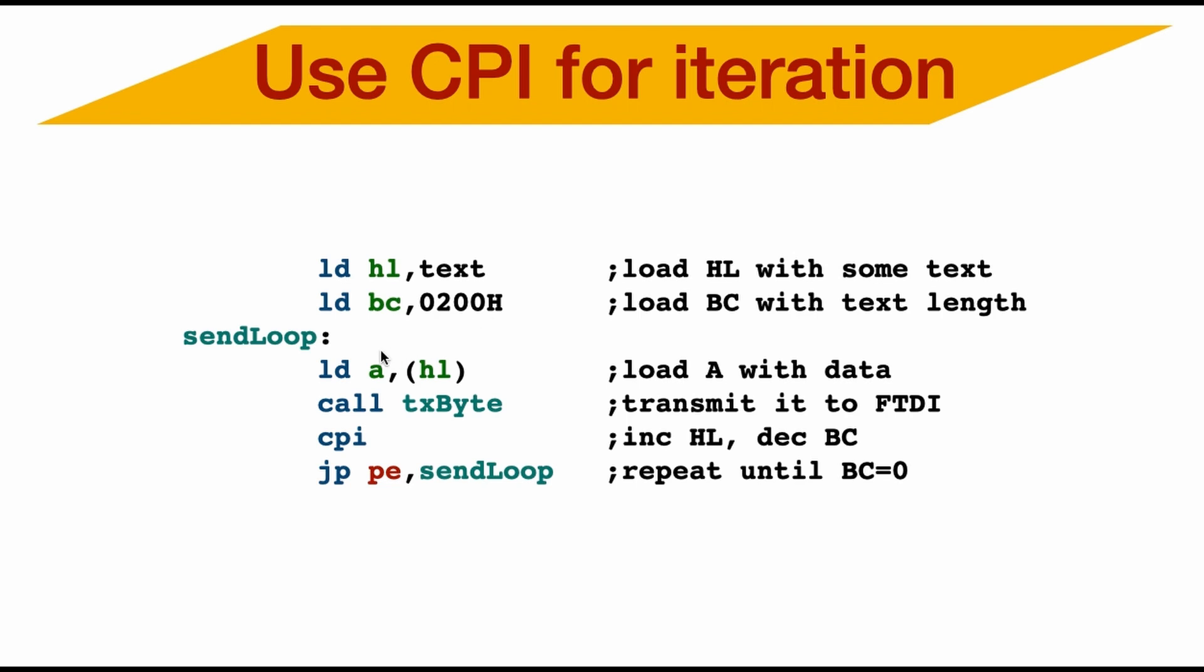So let's say I've got some text pointing to HL and I need to print out 200 hex bytes of length. I use this simple routine. Load A with the value pointing to HL. Call a routine to do something with it. This one here, transmit it by FTDI. Then I do CPI, which will increase HL and decrease BC. But how do I know BC is zero? I just check the parity overflow flag. And there you have it, my current top five Z80 hacks. If you know of any interesting Z80 hacks that you've used, post it in the comments below. Thanks for watching. I hope you found this video enlightening and we'll see you next time.